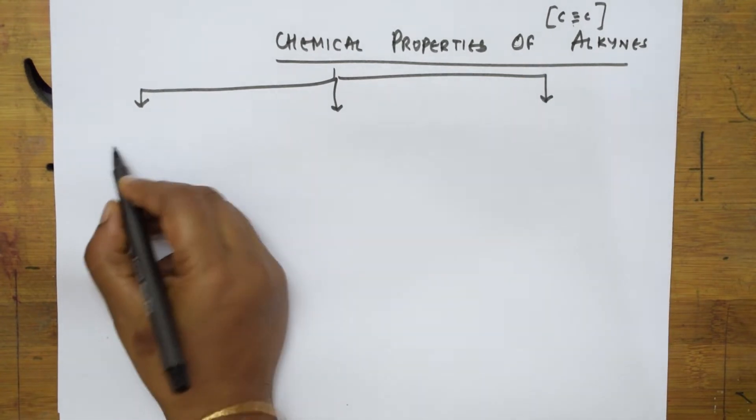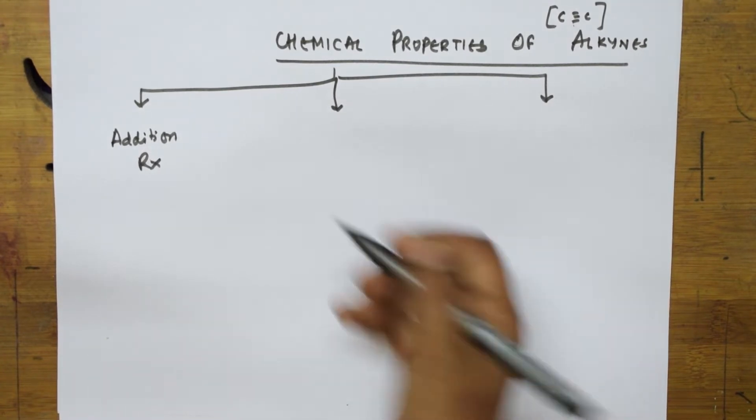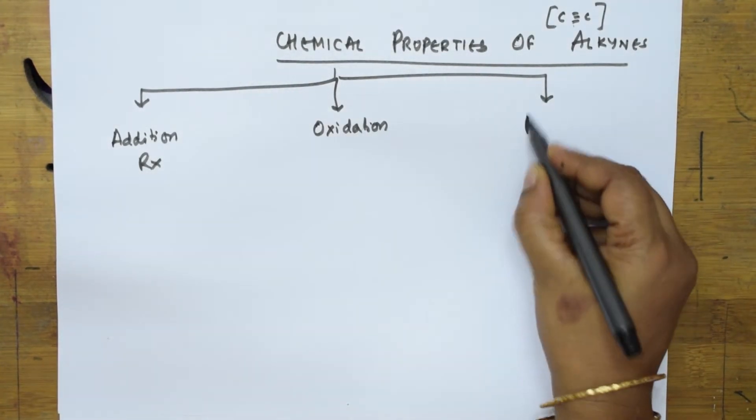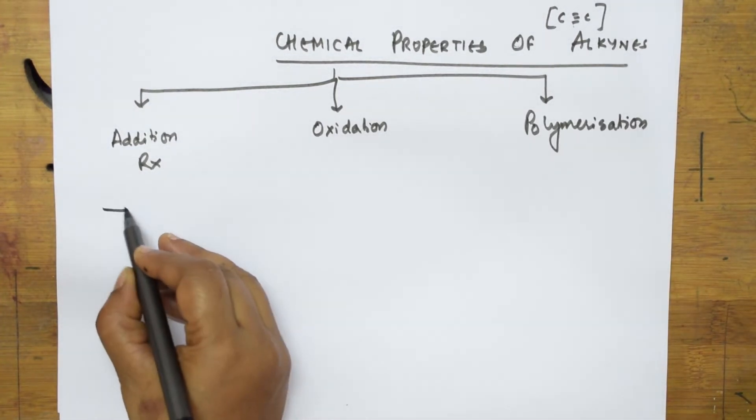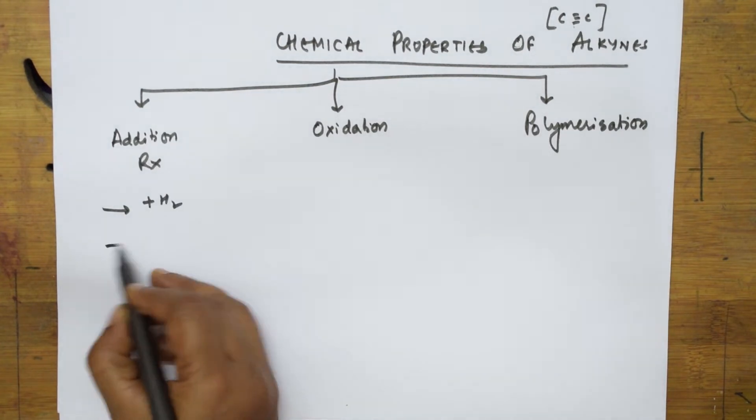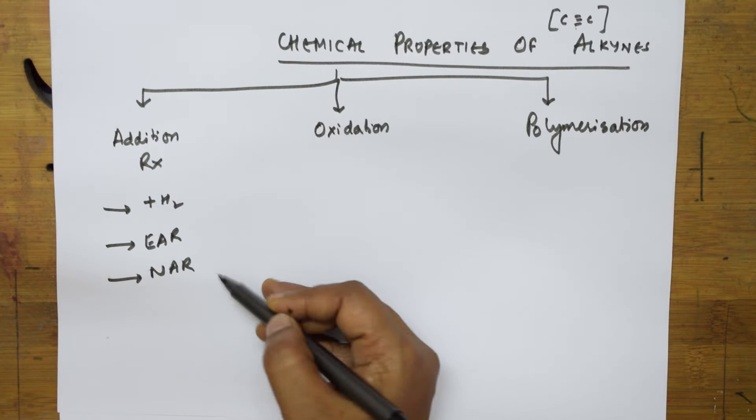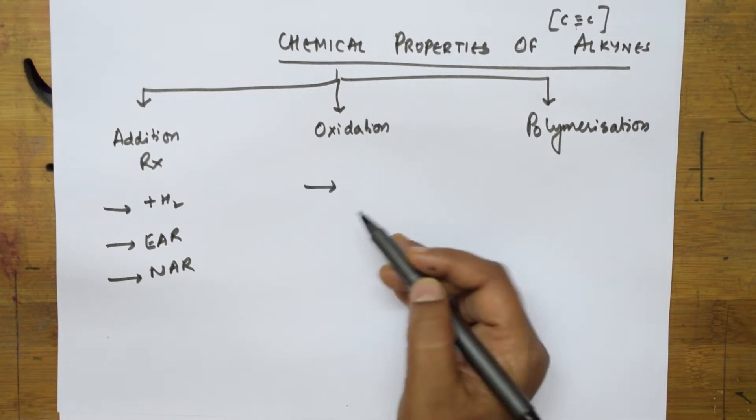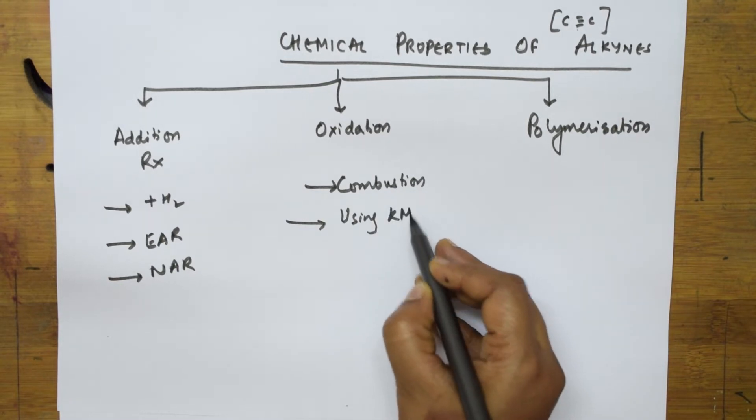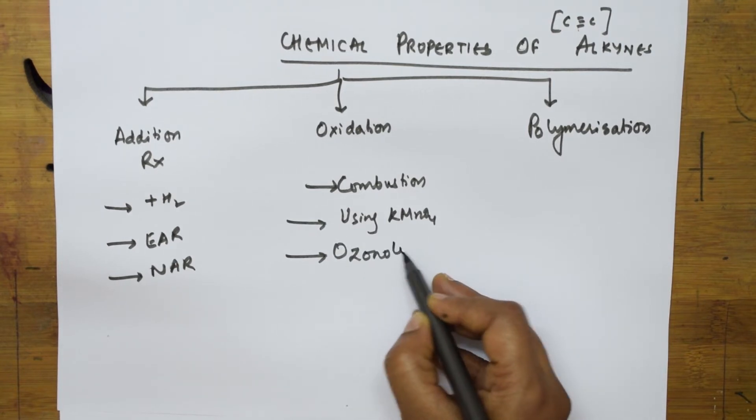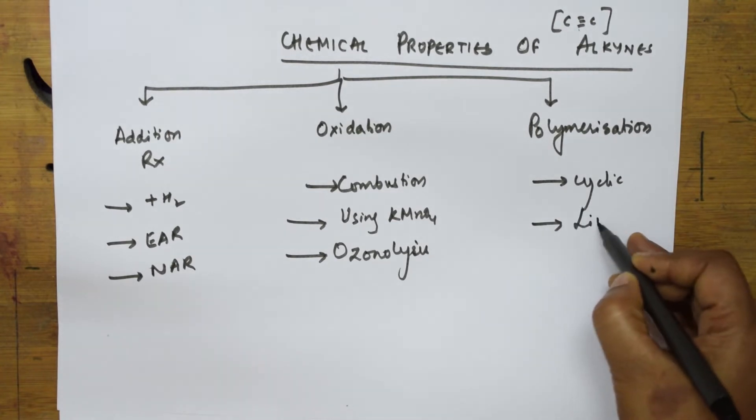It is going to show addition reactions because of the presence of pi bond. It is also going to show oxidation reactions and polymerization reactions. In addition reactions, you have different types like addition of hydrogen, then electrophilic addition reactions, then nucleophilic addition reactions and different subclasses in this. When I speak about oxidation, here we are going to learn oxidation in terms of combustion reactions, oxidation using K-menophor, and ozonolysis.